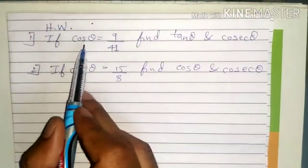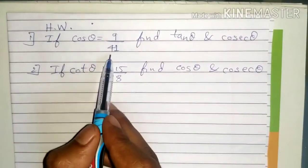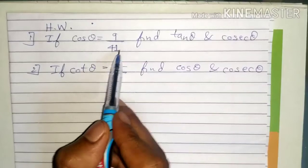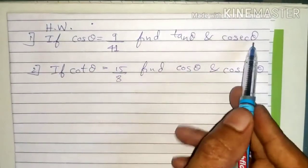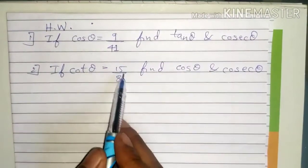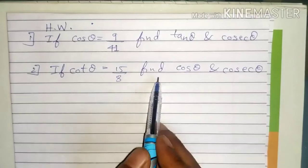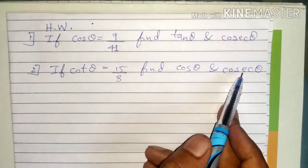You can try these two practice problems: if cos theta equals 9 by 41, find tan theta and cosec theta; and if cot theta equals 15 by 8, find cos theta and cosec theta. Try these and send the answer.